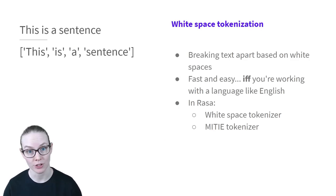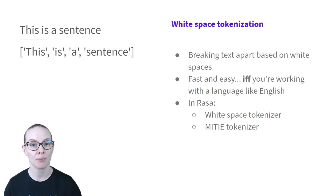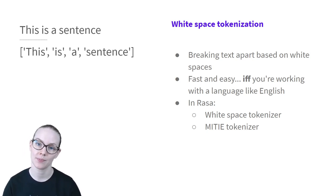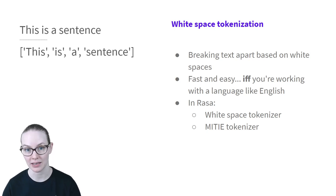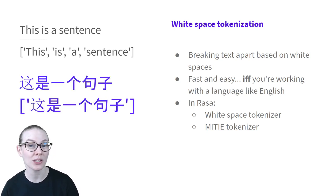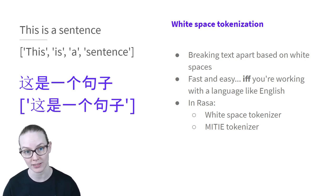Perhaps the simplest approach to tokenization is known as white space tokenization. This is where you take in your text input and break it apart every time there's a space in the sentence. While this method is fast computationally and fairly easy to implement, it really only works if you're working with a language like English, where there are spaces between meaningful units.